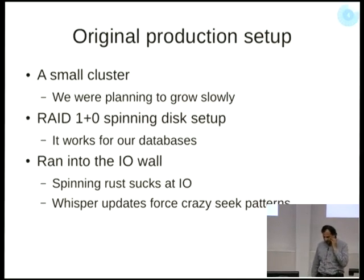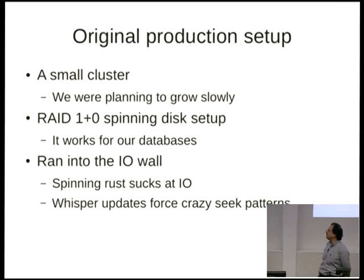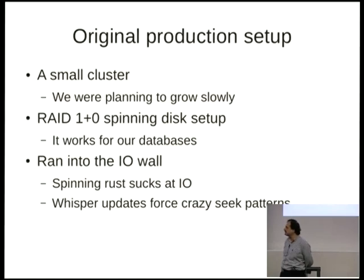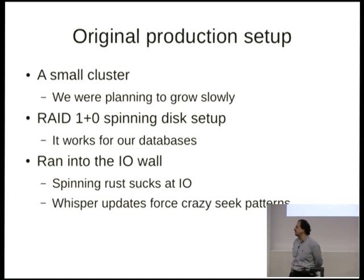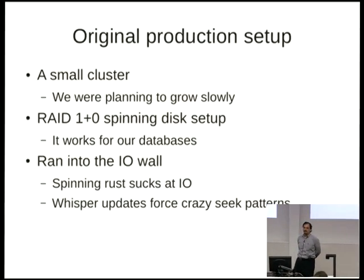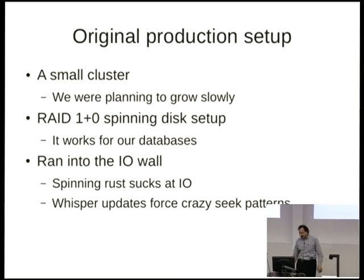The original production setup was one or two boxes with a RAID 1+0 disk setup. Our DBAs said it should handle the number of writes we do, but we ran into the IO wall really fast. Spinning rust sucks — and Whisper uses lots of small individual files, so seek time dominates. The second day, it just couldn't keep up.